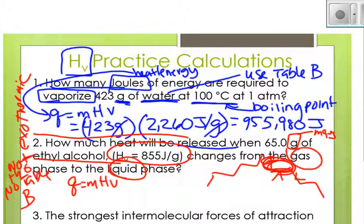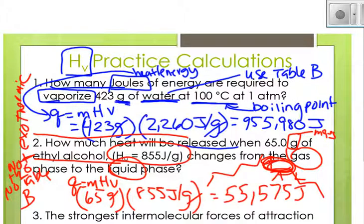So we plug our values in. We have 65 grams, and we have a heat of vaporization here of 855 joules per gram. Your grams will cancel out, and you're left with 55,575 joules.